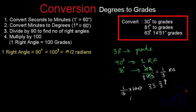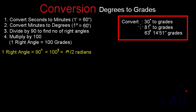Now for the second problem: converting 81 degrees to grades. 81 degrees equals 81/90 right angles, which equals 0.9 right angles. Each right angle equals 100 grades, so 0.9 right angles equals 0.9 multiplied by 100 grades, which equals 90 grades.